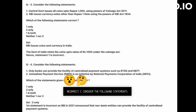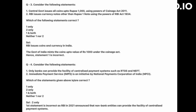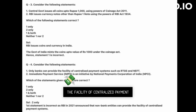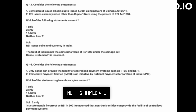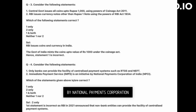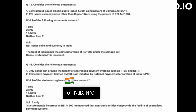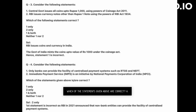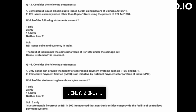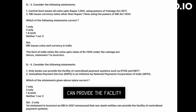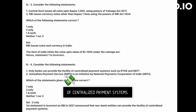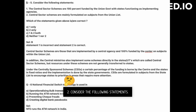Consider the following statements: One, only banks can provide the facility of centralized payment systems such as RTGS and NEFT. Two, Immediate Payment Service (IMPS) is an initiative by the National Payments Corporation of India (NPCI). The first statement is incorrect, as RBI in 2021 announced that non-bank entities can also provide the facility of centralized payment systems.